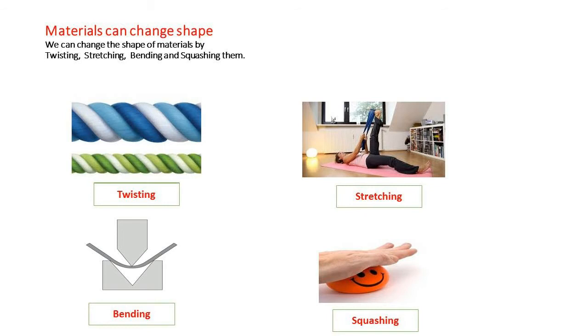بچو ہم materials کے shape کو twisting، stretching، bending اور squashing کے ذریعے change کر سکتے ہیں۔ Twisting کا مطلب ہے مڑوڑنا۔